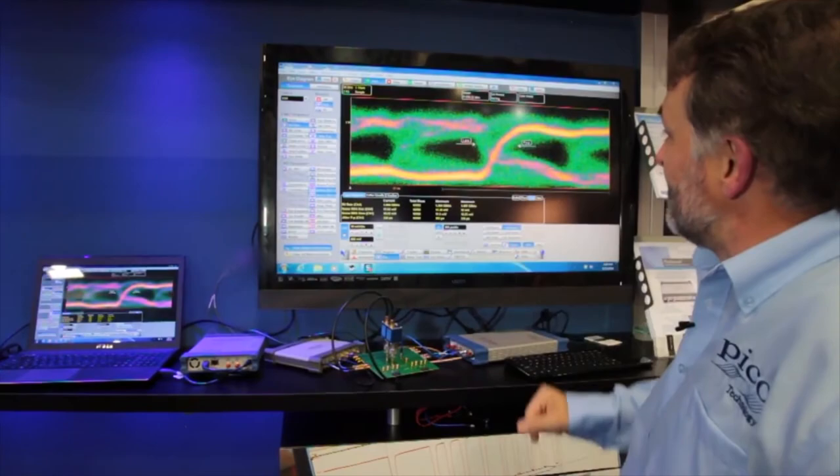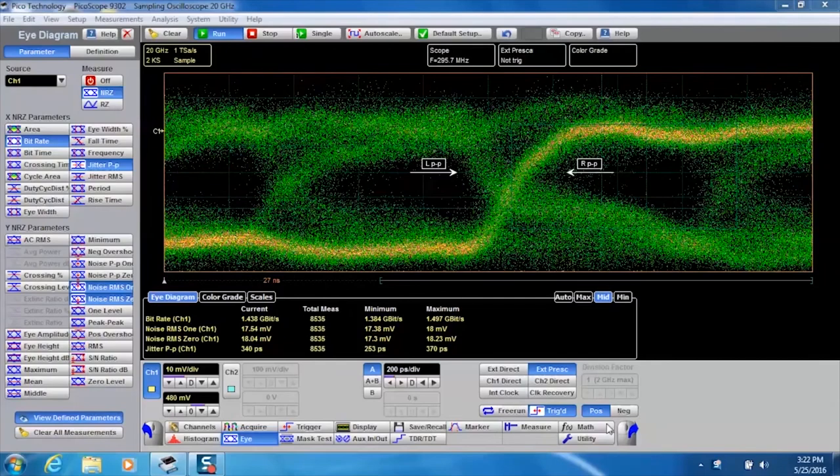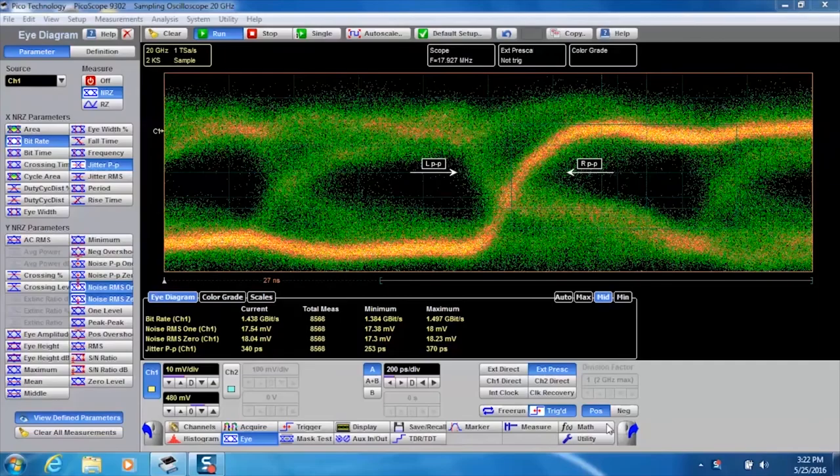So what is this rather ropey looking, I suppose you'd say, eye diagram here? Fairly noisy, fairly jittery. Well, this is a live probing of the HDMI data being sent to this 1080p screen.